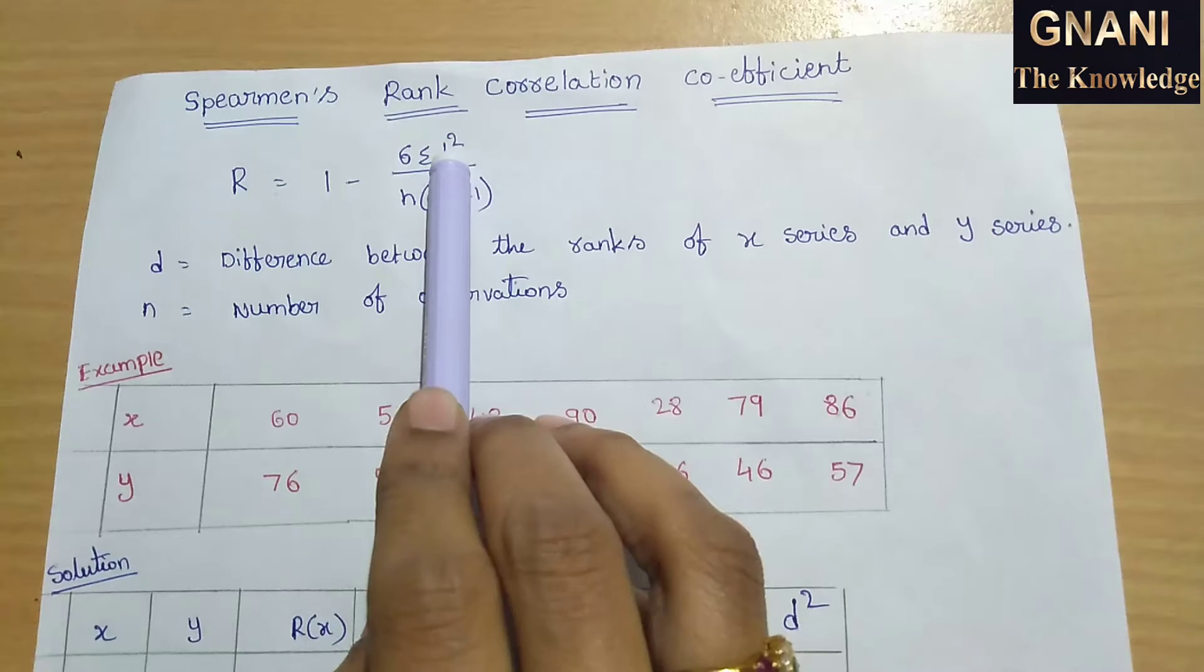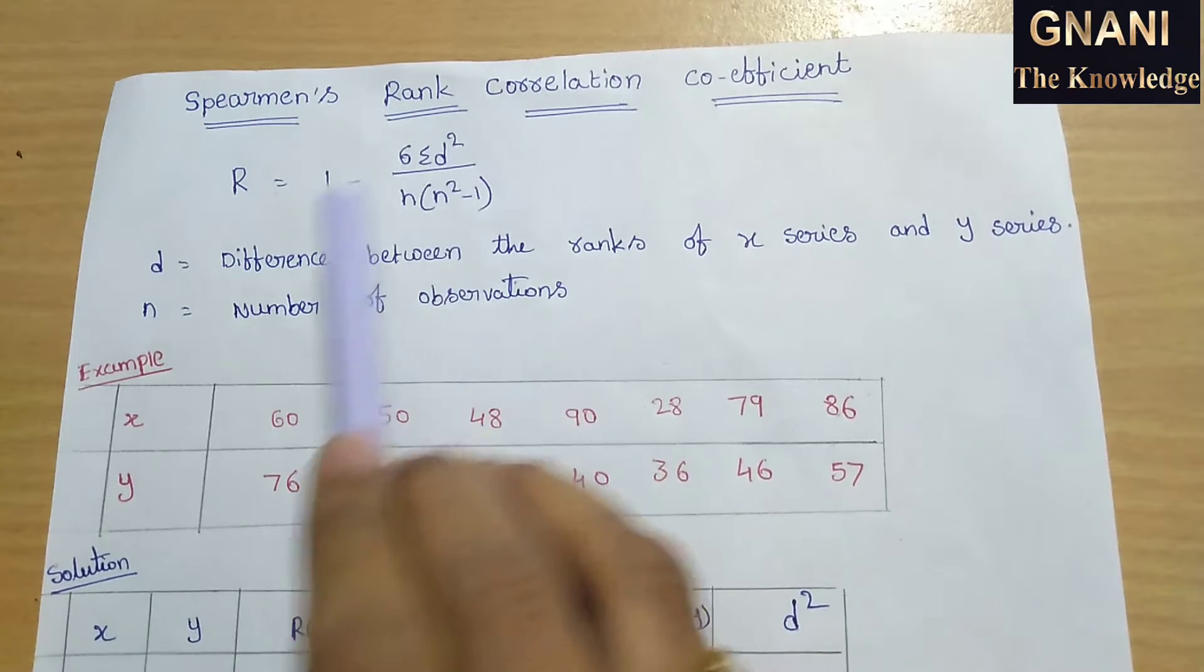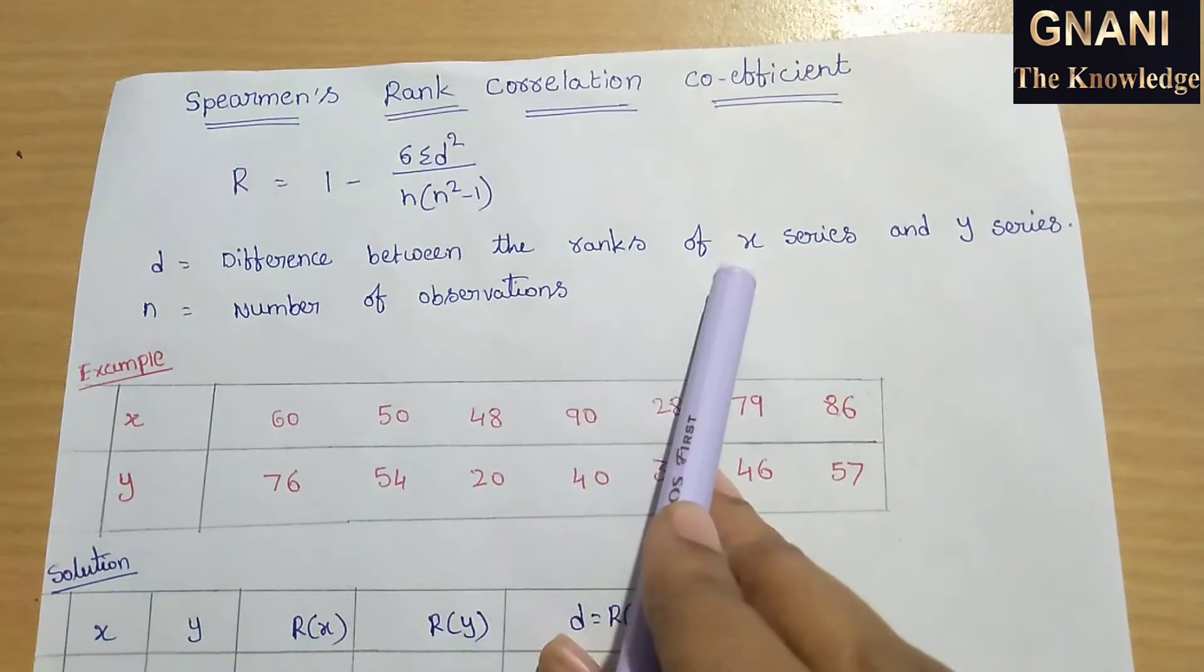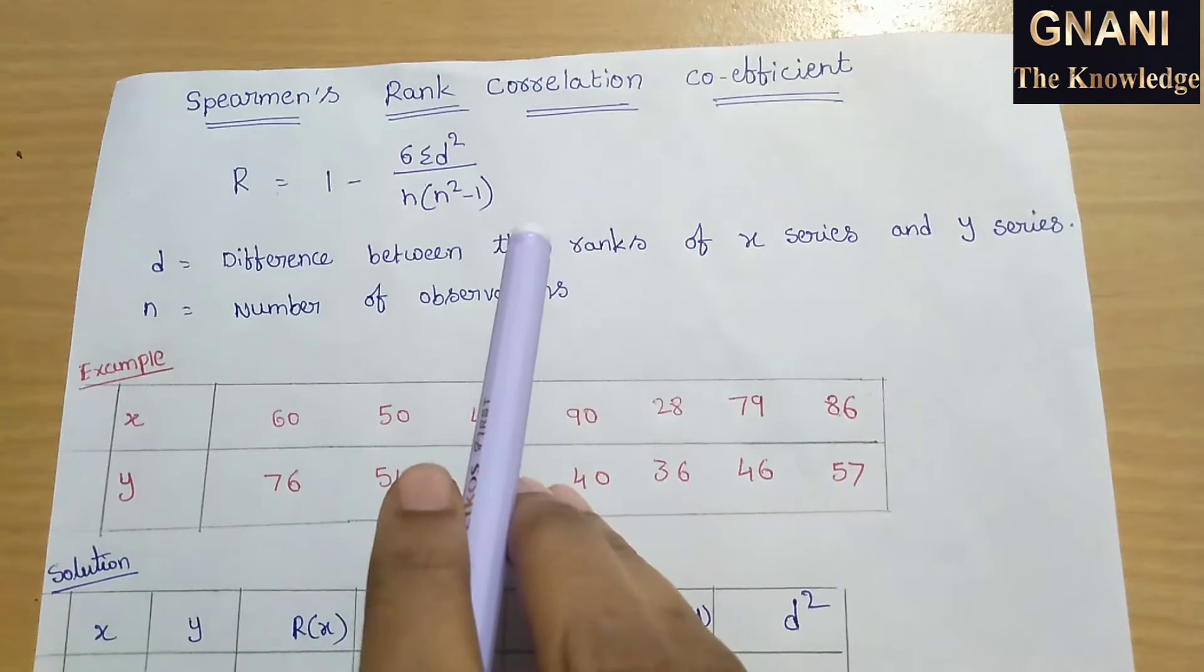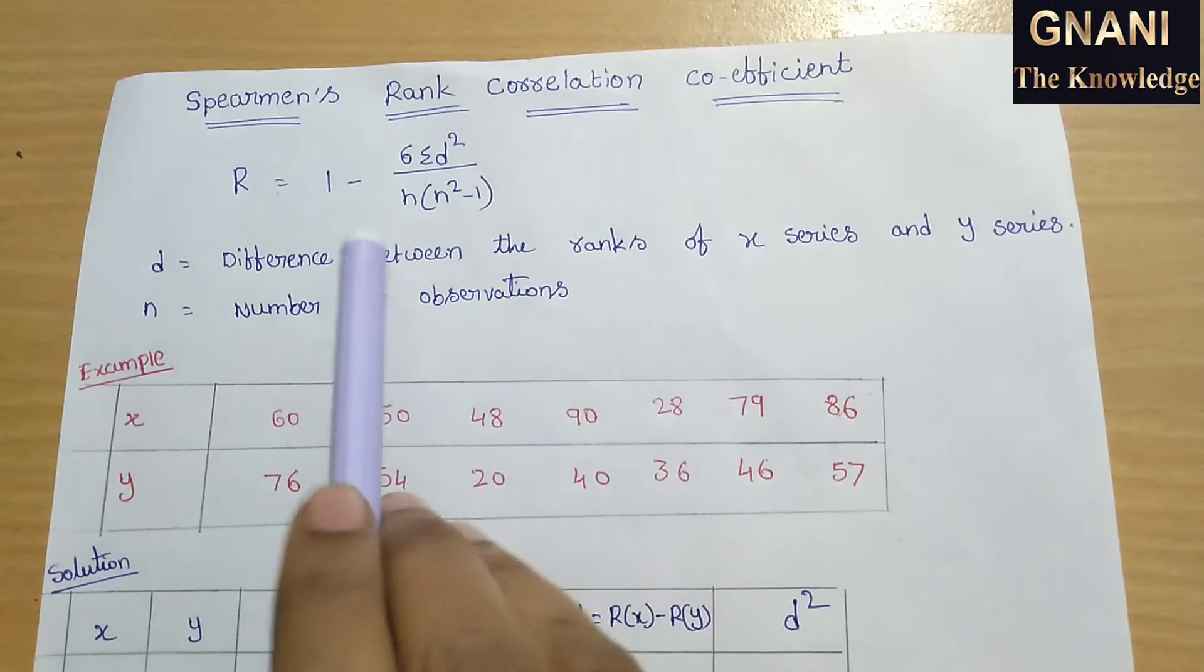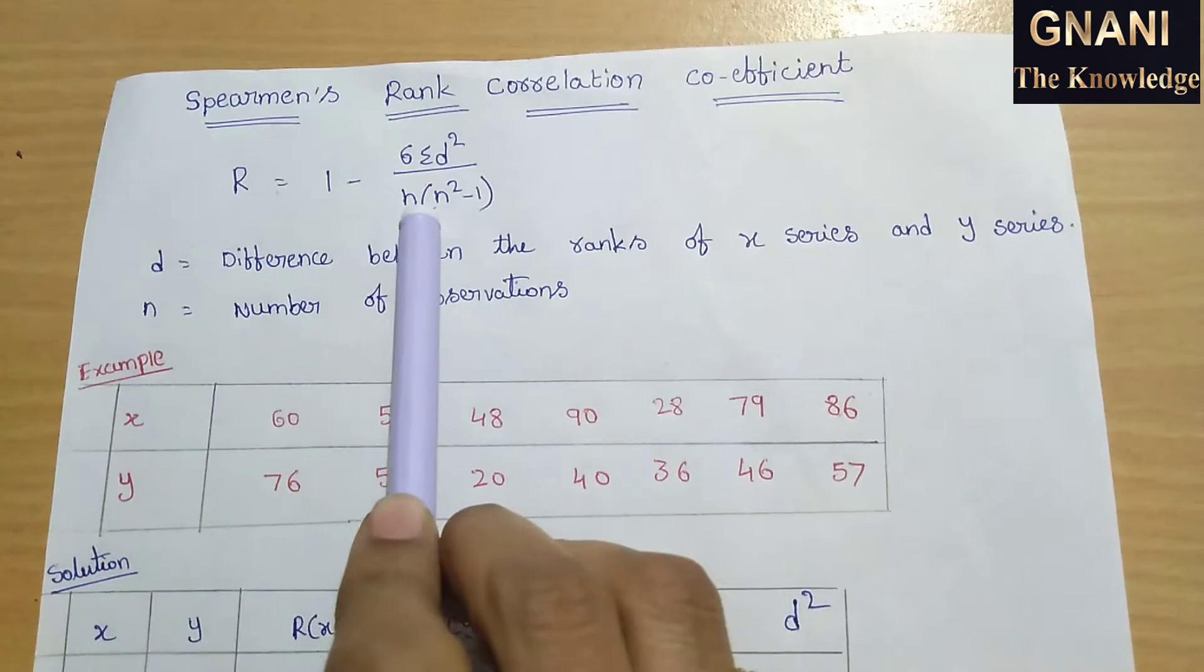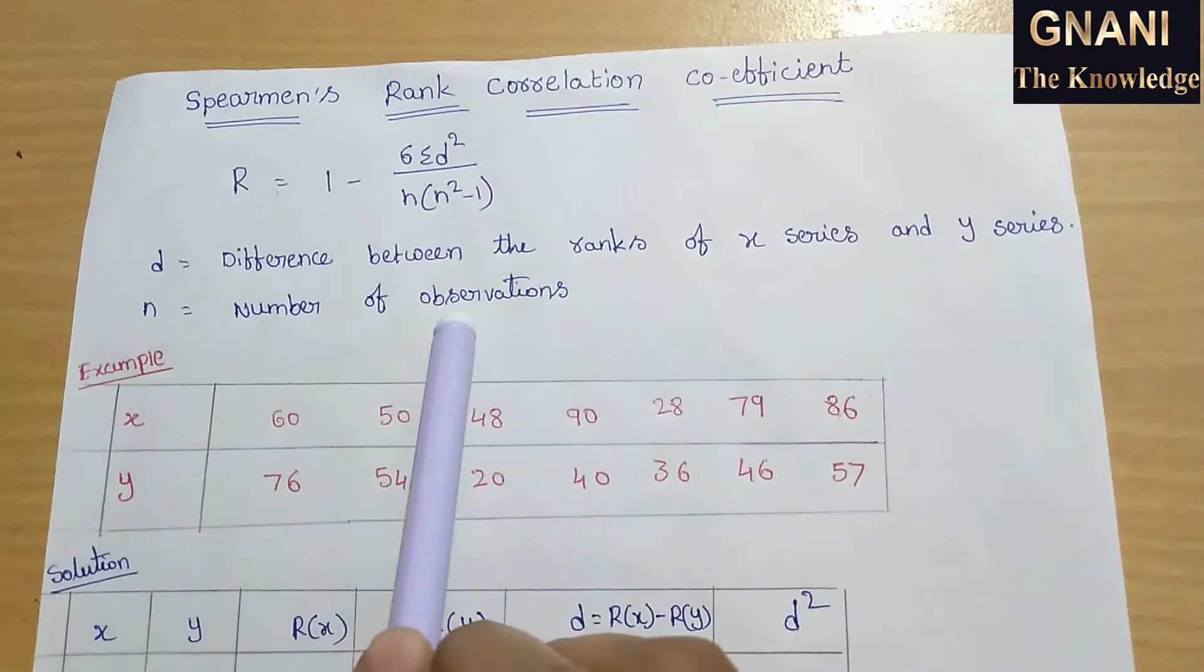Here, what is d? d means difference between the ranks of x series and y series. The difference between x series ranks and y series ranks is denoted as d. And n means number of observations.